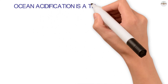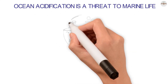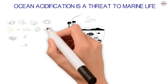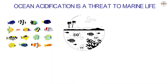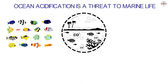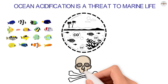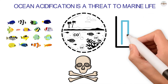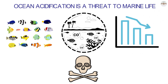Ocean acidification is a serious threat to marine life. When the ocean gets acidic, it changes its chemical properties, and the way marine animals interact with their environment changes. Ocean acidification eats away at coral reefs, which damages the places where aquatic animals breed. Some fish species may become endangered or extinct because the ocean is getting more acidic. Ocean acidification can only be stopped by cutting back on CO2 emissions.